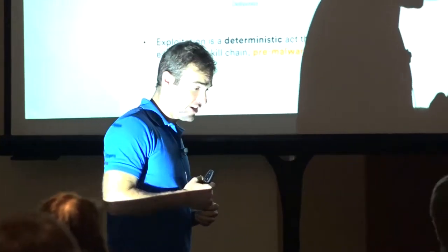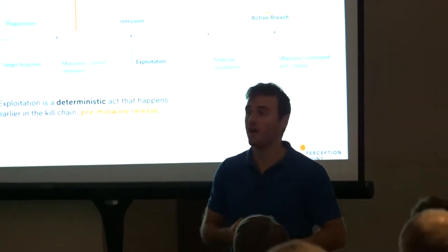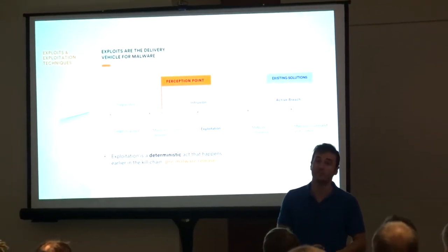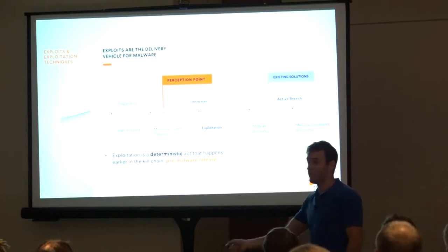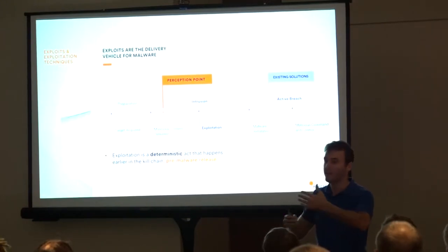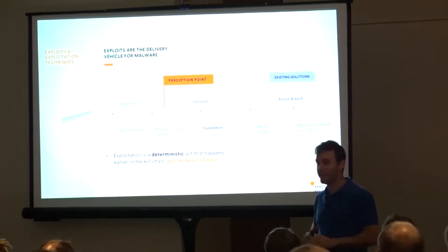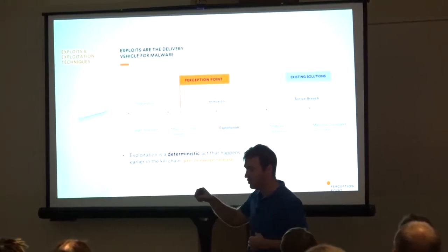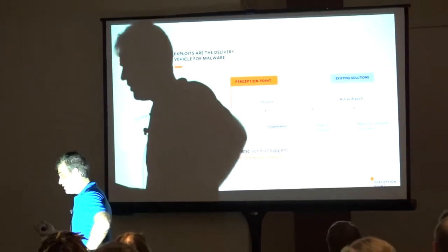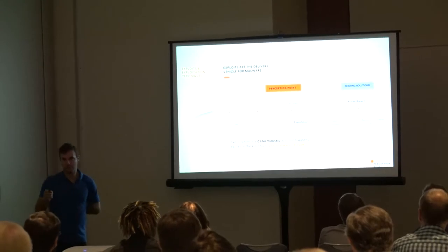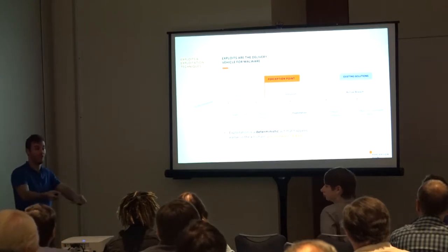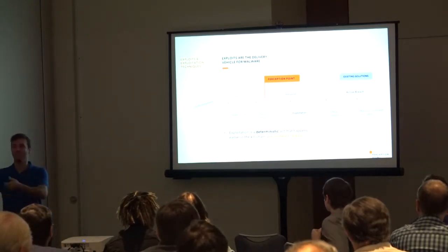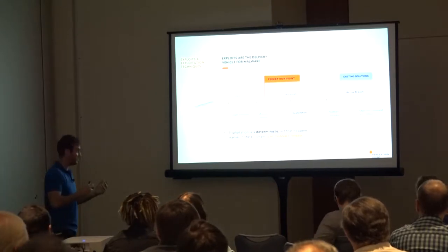The kill chain describes how attackers get into networks. They start with reconnaissance — learning what victims are running, what the interaction points are. When breaking into systems, attackers target endpoints inside the network. They can scan from outside, or talk to people who work inside and provide malicious input content to parsers in Office, Word, browsers, and exploit vulnerabilities.